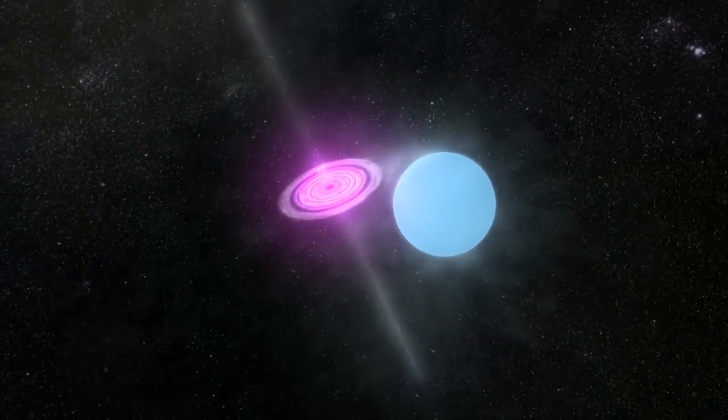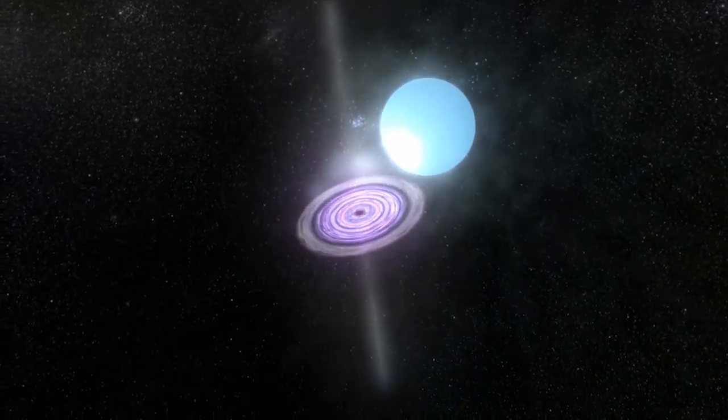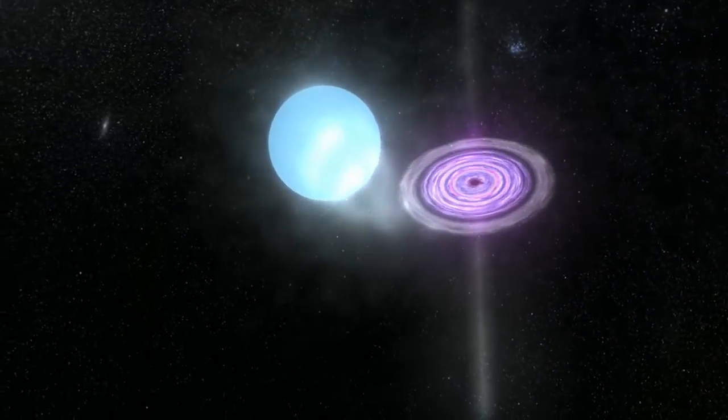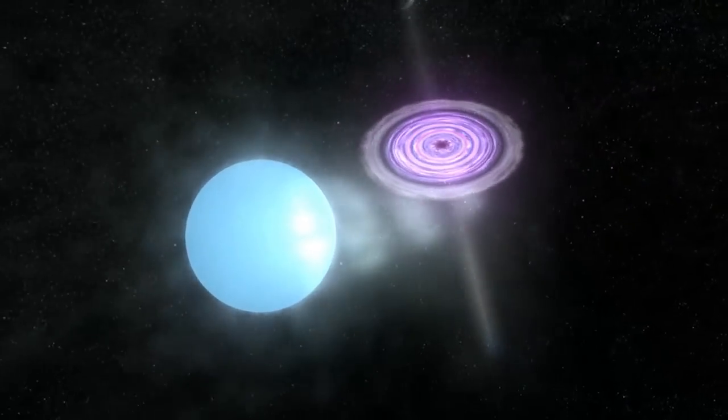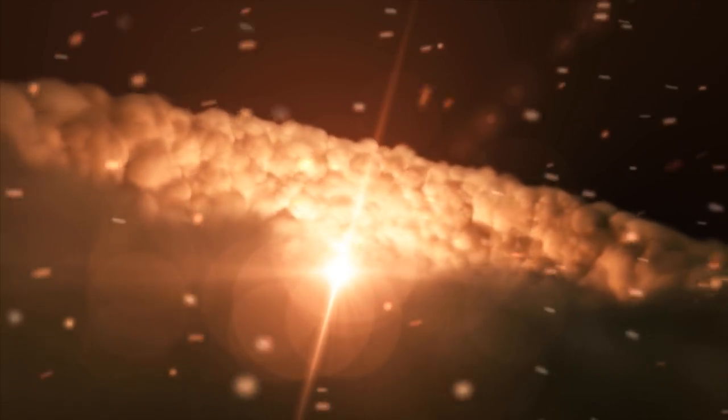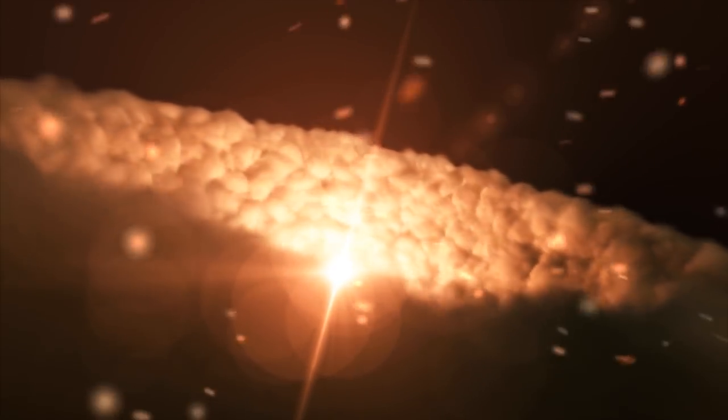The black hole is pulling material from the supergiant companion star toward it. This material forms a disk that rotates around the black hole before falling into it, or being redirected away from the black hole in the form of powerful jets.